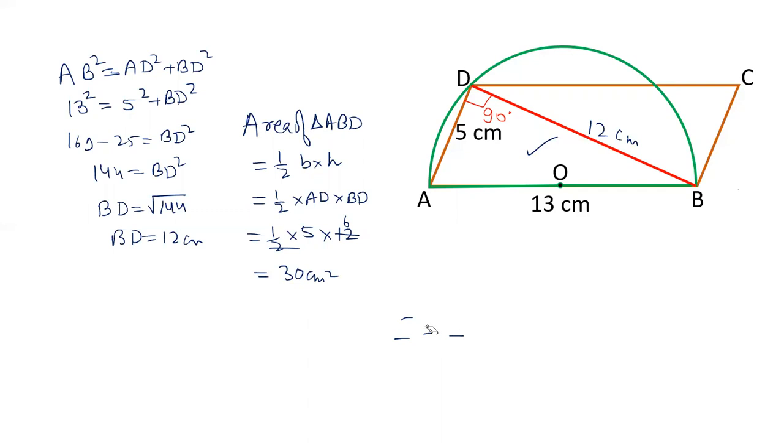Now another triangle is BCD. That is also a right angle triangle. And the area of this triangle is same as ABD because the diagonal of a parallelogram divides the parallelogram into two equal parts. So area of triangle BCD is also 30 centimeters square.